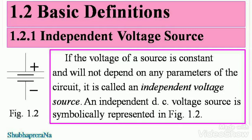First, we have the independent voltage source, shown in figure 1.2. If the voltage of a source is constant and does not depend on any parameters of the circuit, it is called an independent voltage source. An independent DC voltage source is symbolically represented in figure 1.2. For DC voltage, we use straight lines — the positive terminal has a longer line and the negative has a shorter line. Here it's a multiple voltage source, so we show two such combinations.